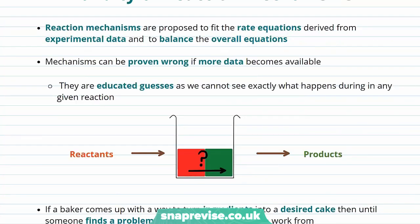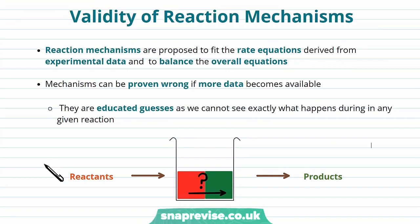Let's think for a moment about the validity of reaction mechanisms. Reaction mechanisms are proposed to fit rate equations, which are derived from experimental data, and they do this to balance the overall equations as well. Mechanisms aren't written in stone and can be proven wrong if more data about how the reaction works becomes available. At best, they're an educated guess towards how the reaction works, because we can't always follow what happens at any given point during the reaction.